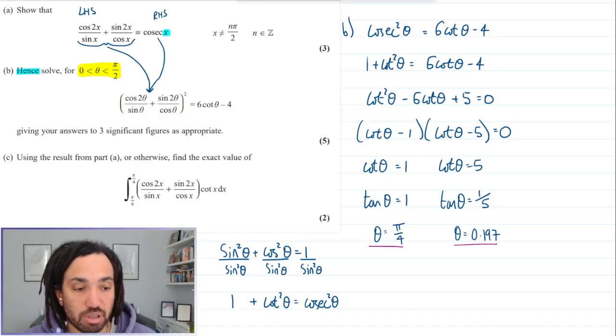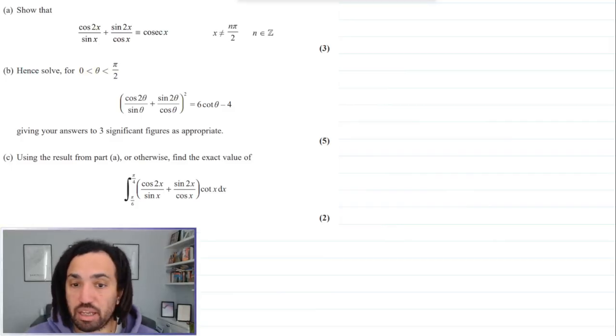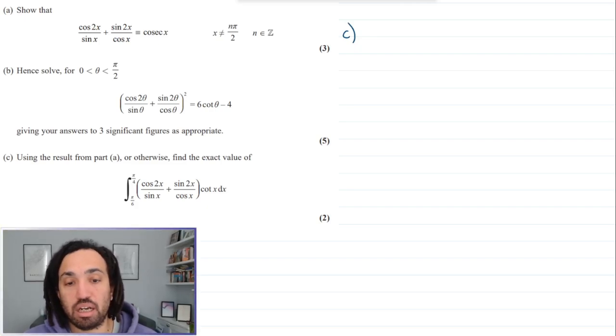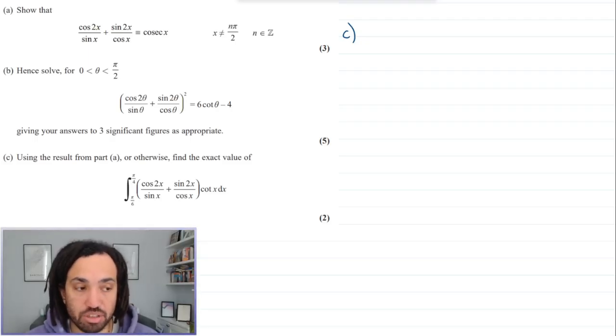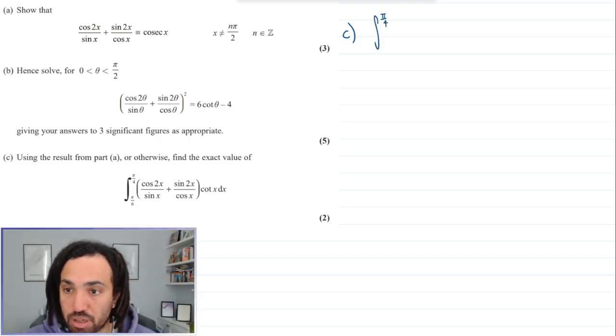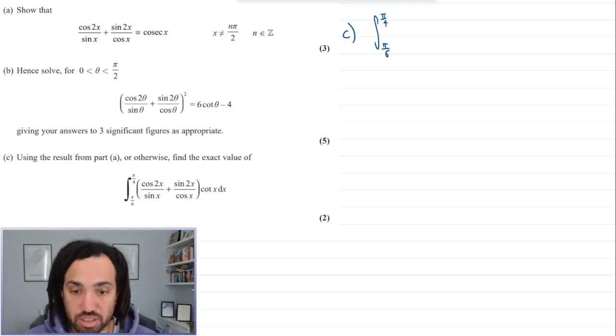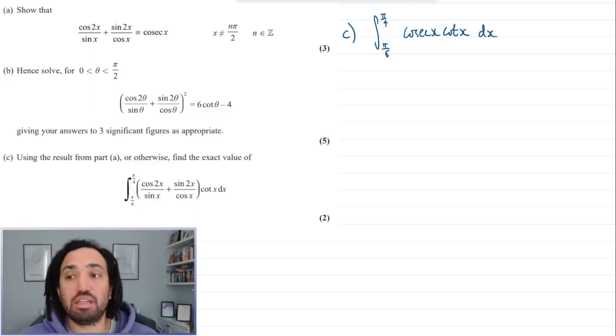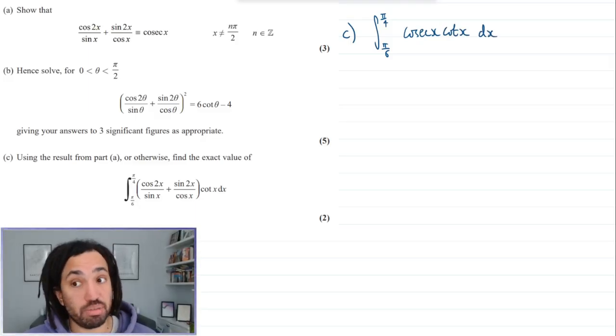Great, so let's move on to the next part. Part c, we've got integration sort of come out of nowhere. It says using the result from part a or otherwise. Well I think I'm going to use the result for part a. I think it's a two mark question, I don't want to over complicate it. So the integral between pi over 4 and pi over 6 of this horrible thing here, which we know is also cosec, so it's just cosec x times through by cot x dx.